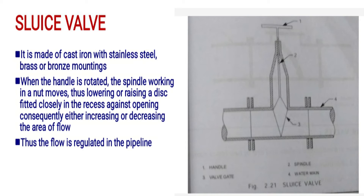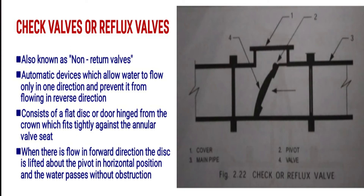Check valves or reflex valves are also known as non-return valves. These are automatic devices which allow water to flow only in one direction and prevent it from flowing in the reverse direction. When there is flow in the forward direction, the disc is lifted above the pivot into the horizontal position.